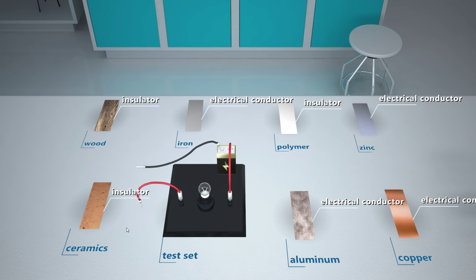As you can see, my helper, substances can be divided into those that conduct electricity, conductor, and those that do not conduct electricity, insulators. Metals belong to the first group. Thank you.